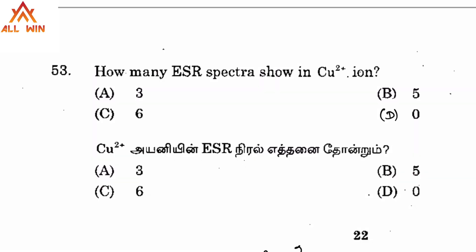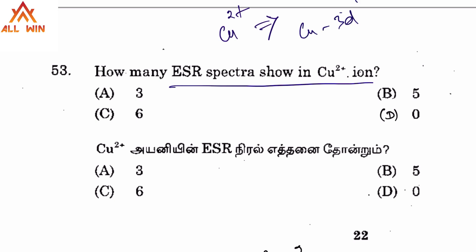Next question: how many ESR spectral lines does Cu2+ show? Let's check the electron configuration. Cobalt is 3d9, 4s2. For Cu+, the configuration is 3d10, and for Cu2+ it is 3d9. In 3d10 there are no unpaired electrons, but in 3d9 there is one unpaired electron.